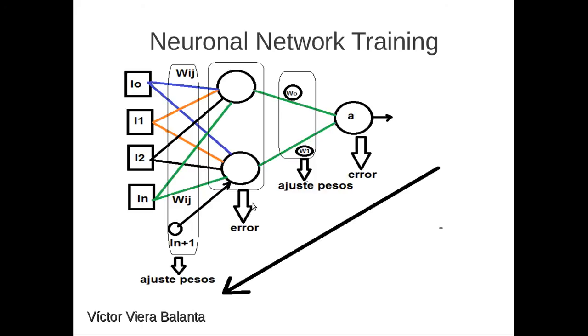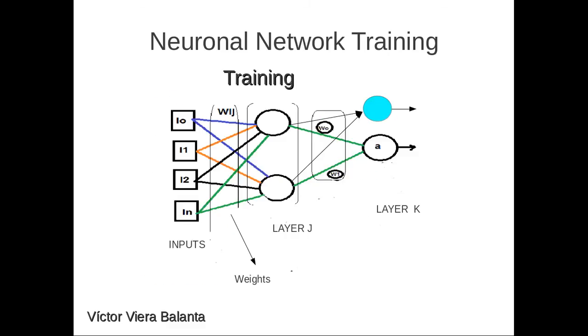This is the backpropagation algorithm. The neural network has layers K, layers J, and weights and inputs.